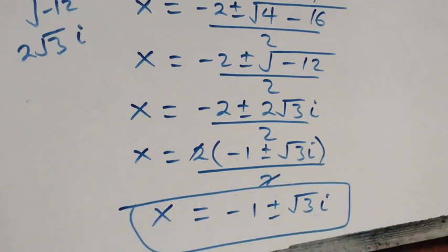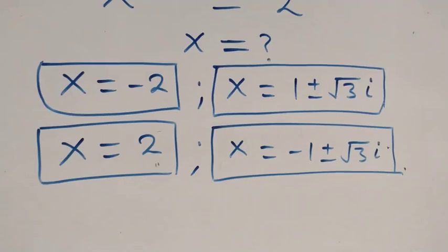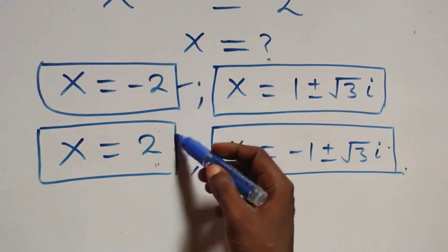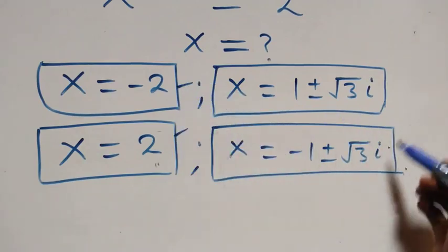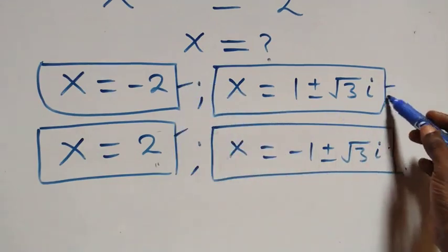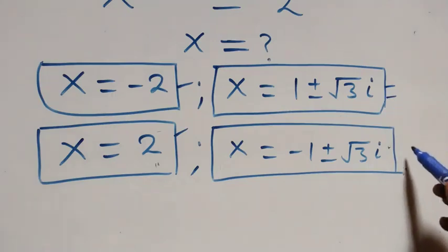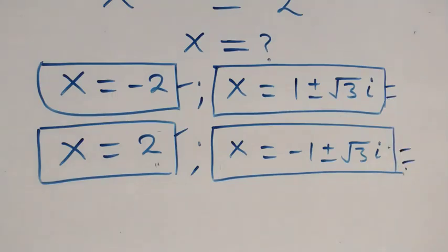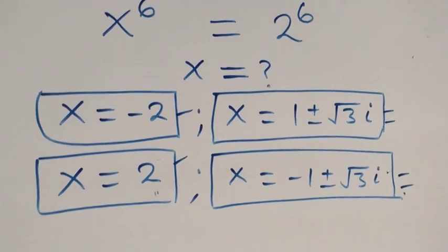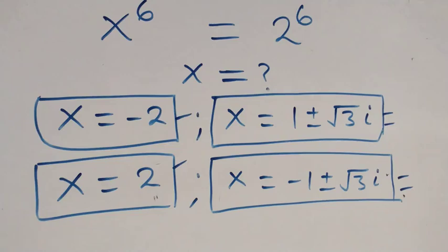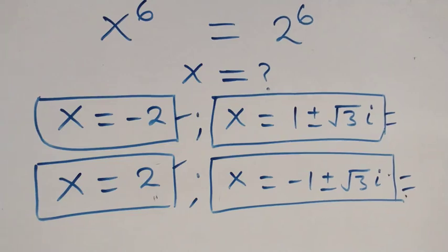Therefore, altogether we have 6 solutions to this problem: 2 real solutions (x = 2 and x = minus 2) and 4 complex solutions — 2 complex solutions from Case 1 and 2 complex solutions from Case 2. Thank you for watching. Don't forget to subscribe for more videos, turn the notification bell on, share this video, give it a thumbs up, and put your comments.